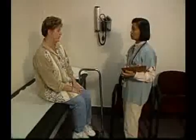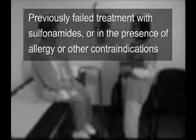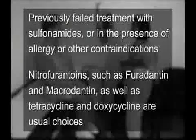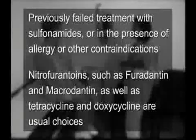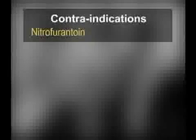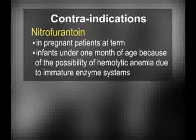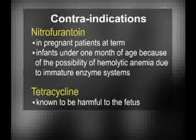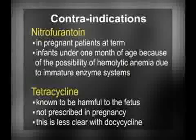However, if the patient had previously failed treatments with sulfonamides, or in the presence of allergy or other contraindications, another class of medications would have been chosen. The nitrofurantoins, such as Furadantin and Macrodantin, as well as tetracycline and doxycycline, are usual choices. Nitrofurantoin is contraindicated in pregnant patients at term and in infants under one month of age because of the possibility of hemolytic anemia due to immature enzyme systems. Tetracycline is known to be harmful to the fetus, so it is not prescribed in pregnancy, although this is less clear with doxycycline.